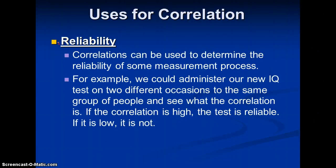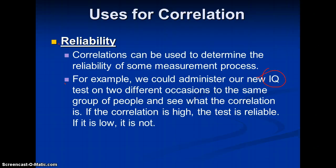We can use correlation to estimate reliability. We could administer our new IQ test on two different occasions to the same group and measure the correlation. If the correlation is high, the test is reliable; if it is low, it is not. Intelligence is supposed to remain relatively stable — someone taking the test at time A and time B should not have wildly varying scores.